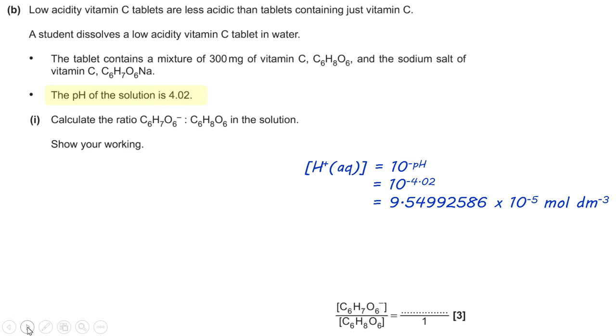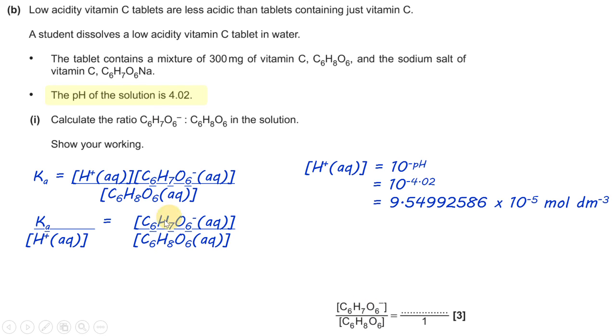So, the first thing to do is to identify and establish the concentration of hydrogen ions. So, you can do that by 10 to the minus pH. And you need to use the Ka expression, but you need to rearrange it so that we have this as the subject.